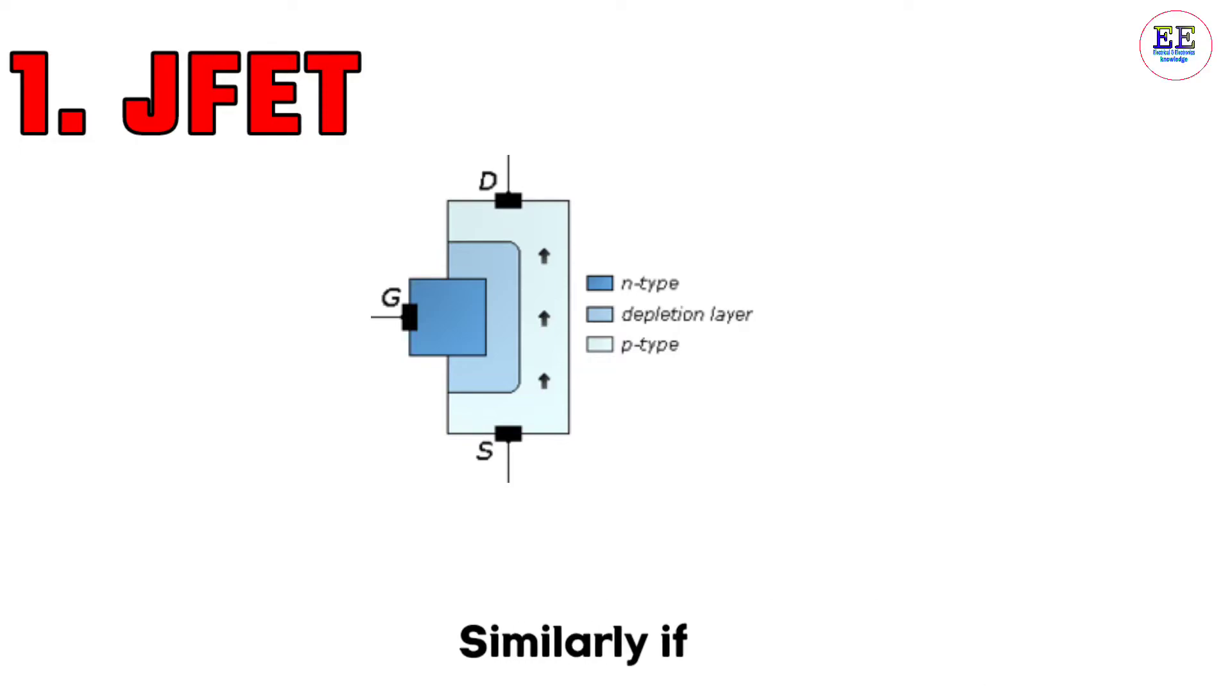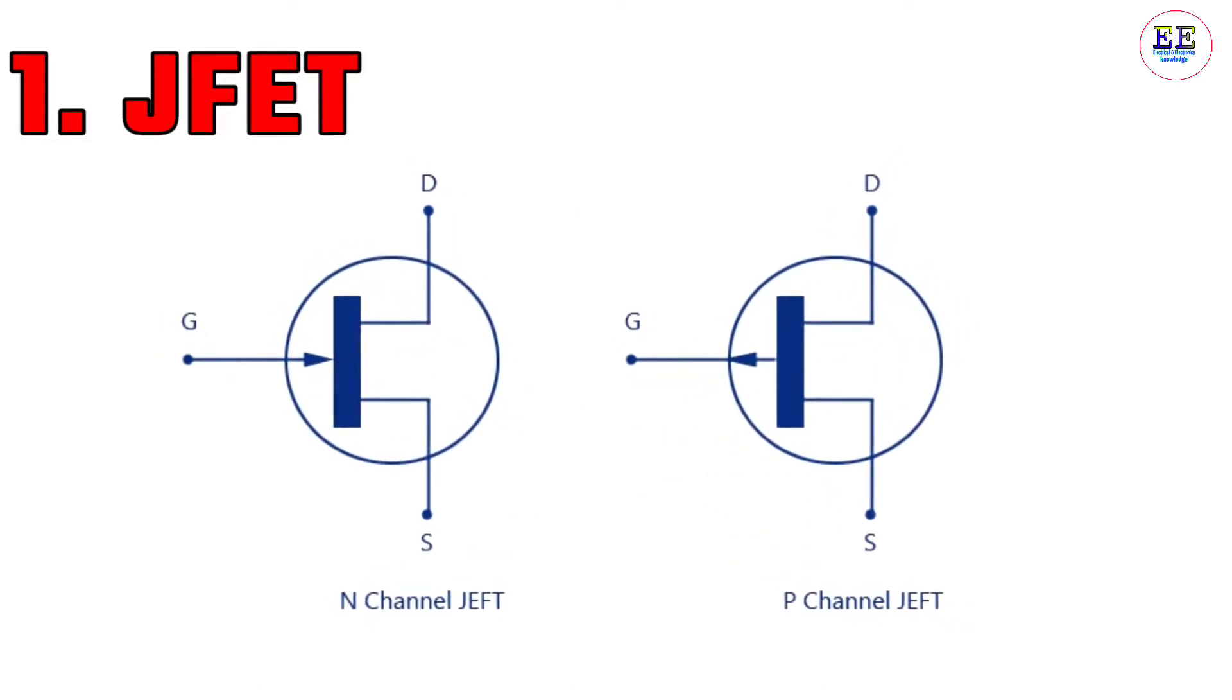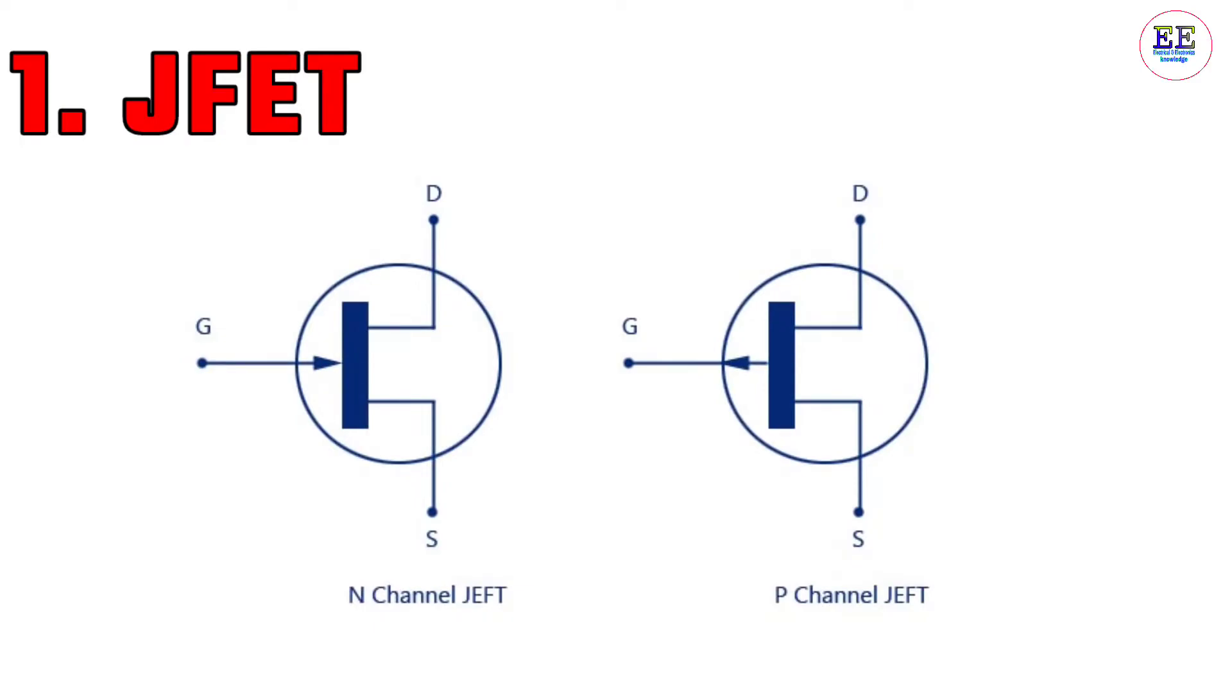If the channel is made of N-type semiconductor, it's known as N-channel JFET. Similarly, if the channel is made of P-type material, it's known as P-channel JFET. You can see the symbols of N-channel and P-channel JFET.